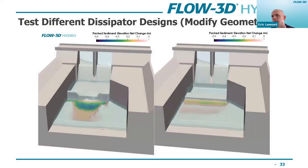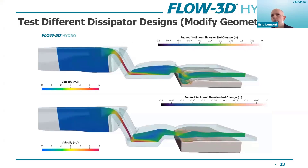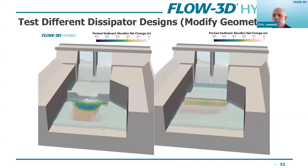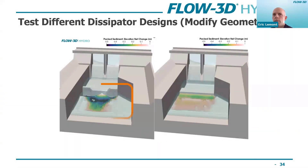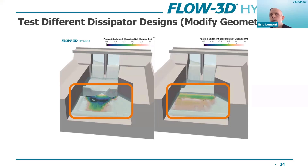Once we've done this, we can test different designs. On the right I did a deeper dissipator and removed the sill. Even though this isn't a calibrated example, these are still valuable models when looking at different designs. You can clearly see the one on the right has some erosion, but certainly not as much as the one on the left. So even uncalibrated examples can give you useful insight when using the sediment transport model. It's really just activate the physics, define it in the geometry, and the same steps as before.